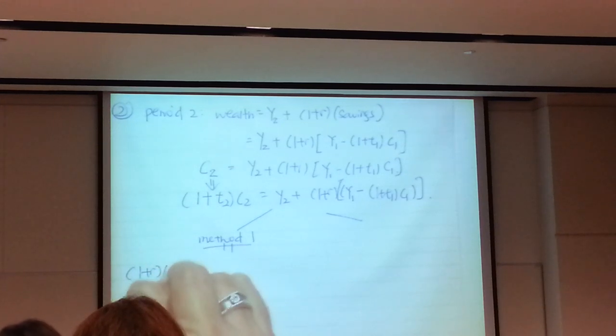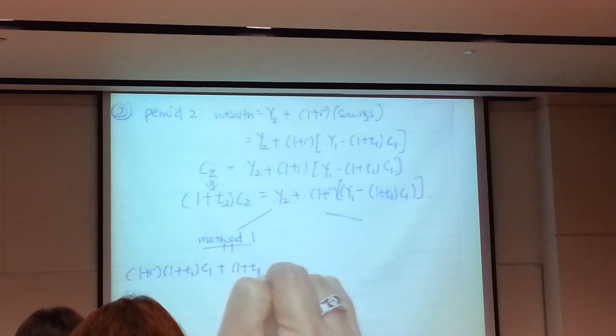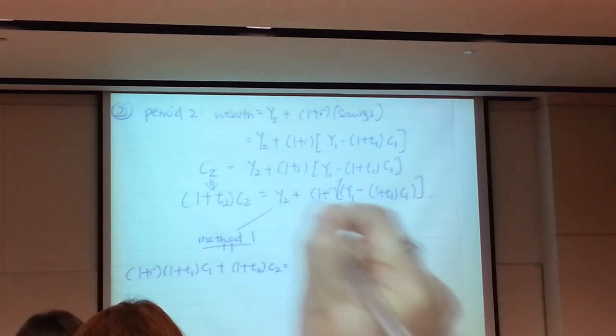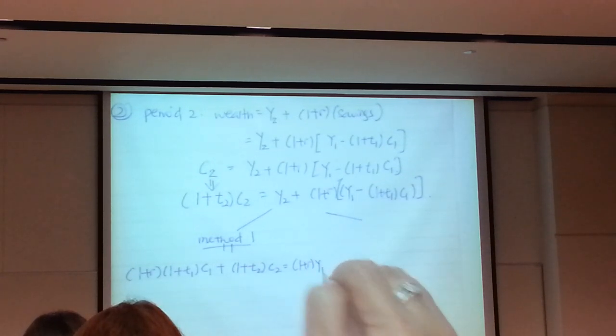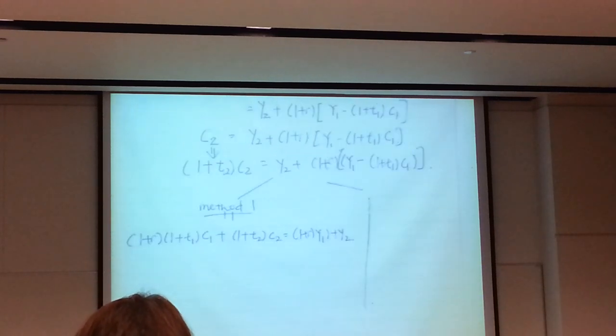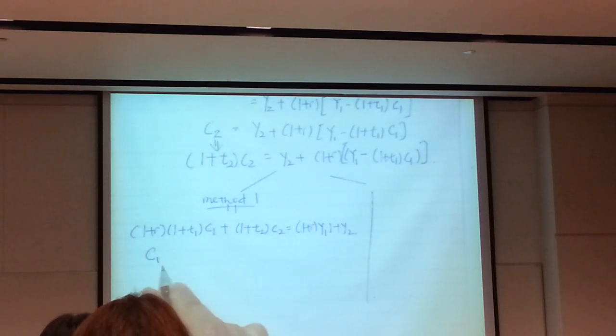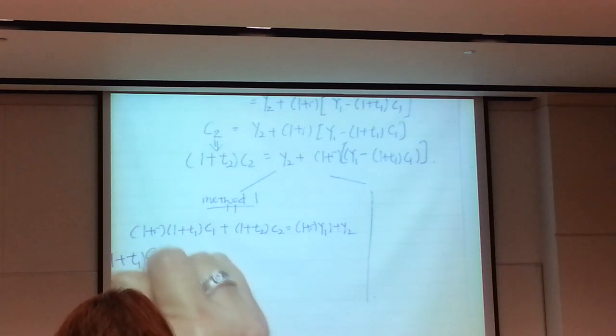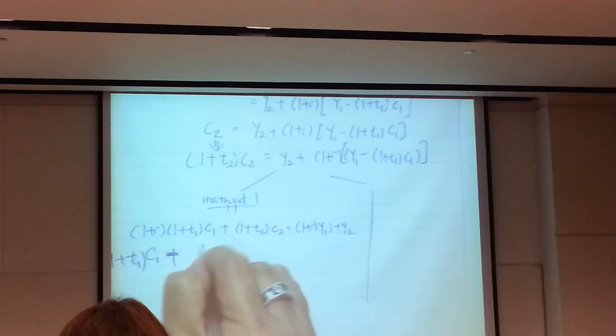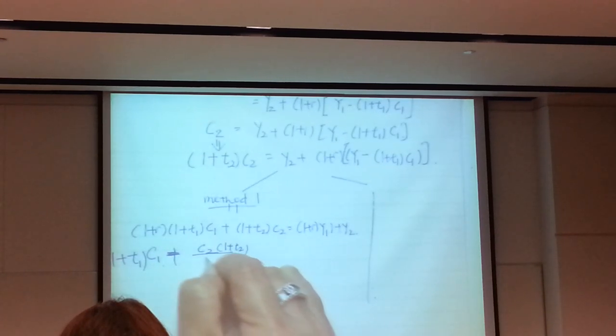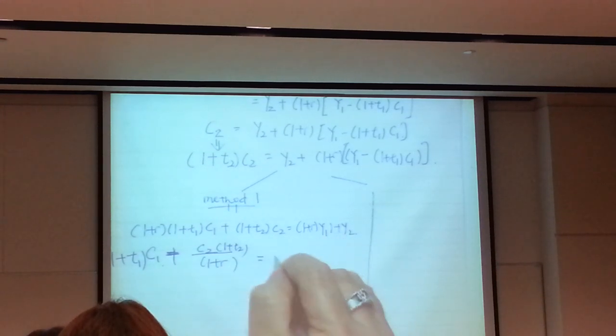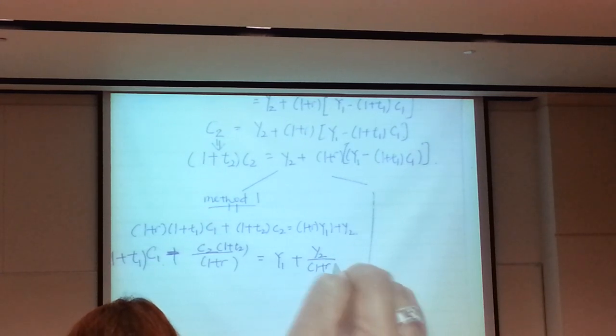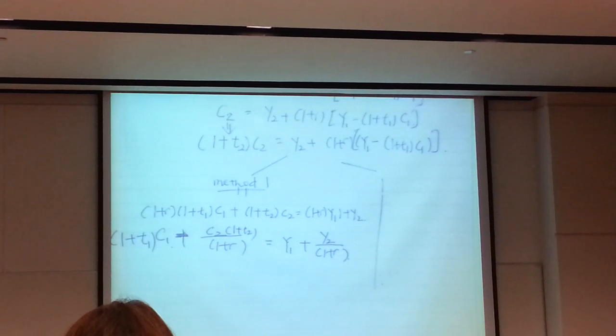But all you do is you systematically substitute in. So as long as you understood your steps in deriving the IBC, you are able to get this, except equation looks a little bit more cumbersome. So what do you do to the wealth in period 2? You must spend all. So C2 must be equal to the entire wealth. So you will keep writing the entire chain of equation. But what is C2 now? C2 is 1 plus T2 times C2. Because this is given in the question. So equals to Y2 plus 1 plus R, Y1 minus 1 plus T1, C1.